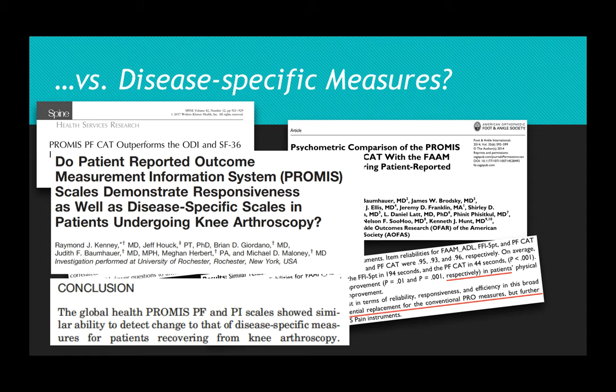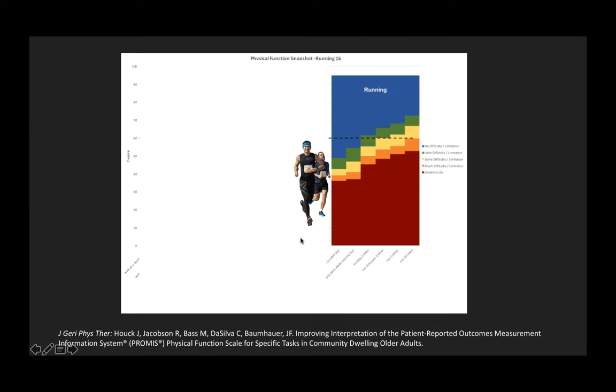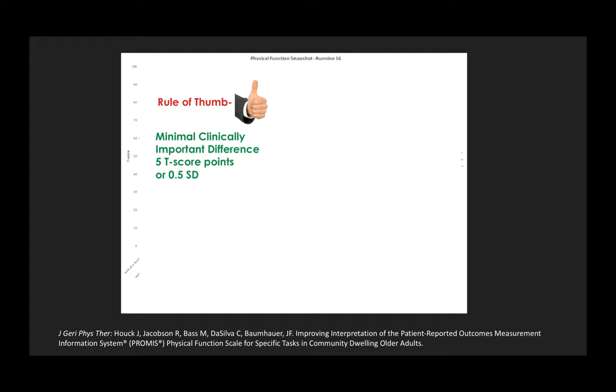And finally, a study I performed with my colleagues at the University of Rochester in patients undergoing knee arthroscopy. The Global Health PROMIS Physical Function and Pain Scales showed similar ability to detect change to that of disease-specific measures for patients recovering from knee arthroscopy. So, if we go back to our example of the athlete running and look at the items for running, we can see that they scale quite nicely from a lower to higher task. And this provides the PROMIS Physical Function Computer Adaptive Test with the correct precision to pick up change over time. This results in a minimal clinically important difference or MCID estimated at around 5 T-score points or a half standard deviation.